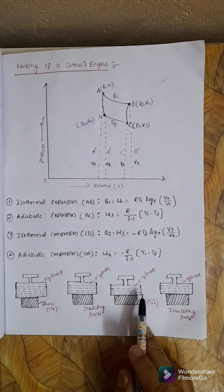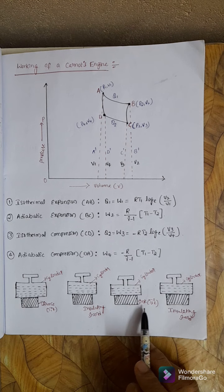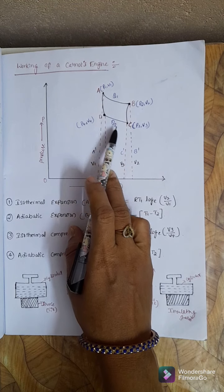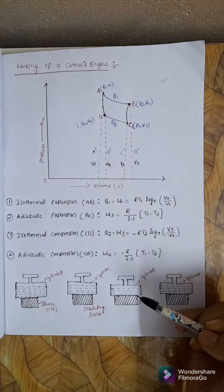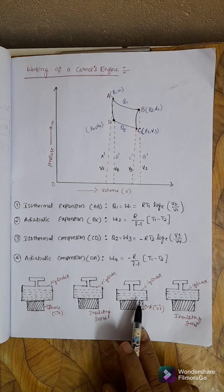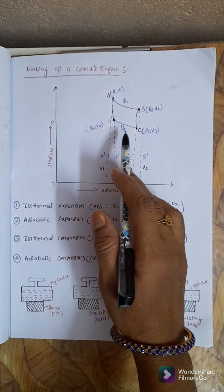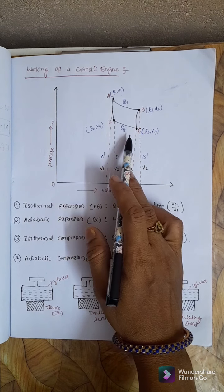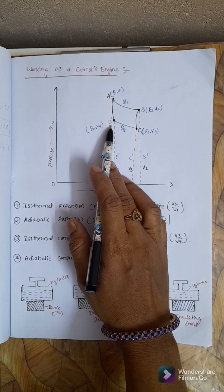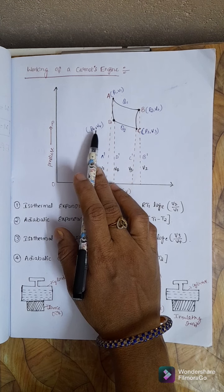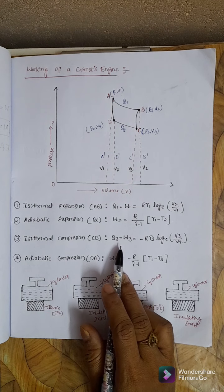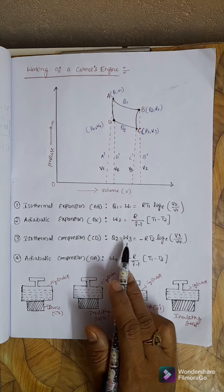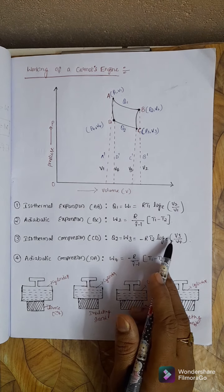The cylinder is removed from the insulating stand and placed over the sink, which is at temperature T2 Kelvin. Isothermal compression from C to D takes place. The gas is compressed from C to D, and the quantity of heat rejected to the sink is Q2. The work done is W3, and Q2 = W3 = −R·T2·log(V3/V4). The curve CD shows isothermal compression.